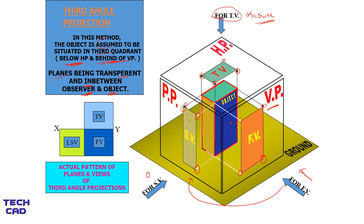So this is the third angle projection with top view, front view, and left hand side view. I will explain more details in coming videos, where I will take more examples of orthographic projections and clearly show how to make orthographic projections with a drafter and pencil. If you have any doubts regarding this video, please comment in the comment section. Thank you everyone.